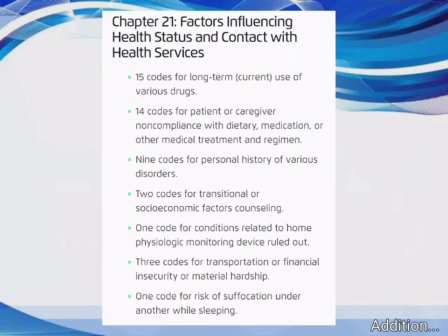Factors Influencing Health Status and Contact with Health Services: 15 codes for Long-Term Current Use of Various Drugs, 14 codes for Patient or Caregiver Non-Compliance with Dietary, Medication, or Other Medical Treatment and Regimen, 9 codes for Personal History of Various Disorders, 2 codes for Transitional or Socioeconomic Factors Counseling, 1 code for Conditions Related to Home Physiologic Monitoring Device ruled out, 3 codes for Transportation or Financial Insecurity or Material Hardship, and 1 code for Risk of Suffocation Under Another While Sleeping.